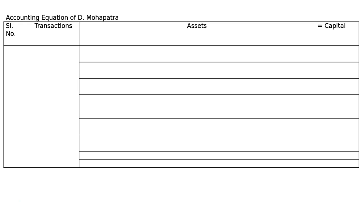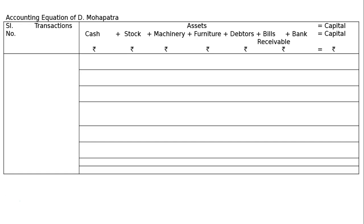After reading the question, we have many assets: cash, stock, machinery, furniture, debtors, bills receivable, and bank. On the liability side, there is only capital — no creditors or other liabilities.